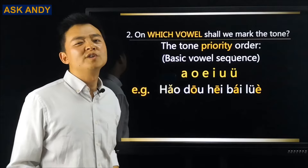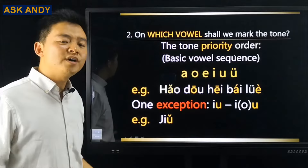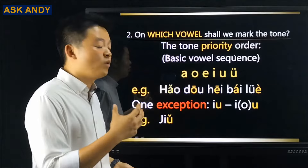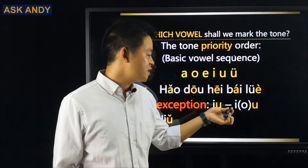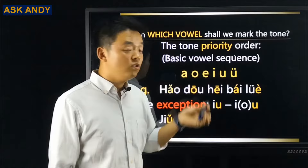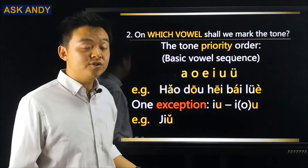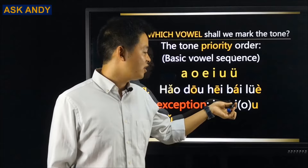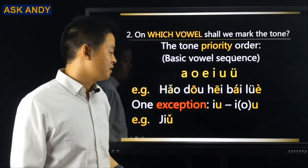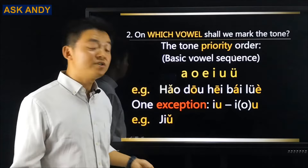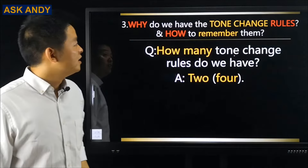We have only one exception: I-U. Why? Because IU is not the full spelling — the full spelling is IOU. In IOU, O is the one that should carry the tone. But O is omitted, leaving I and U. Since I already has a dot on top, we mark the tone on U instead. For example, 九 (jiǔ) — this is the number nine or means alcohol.